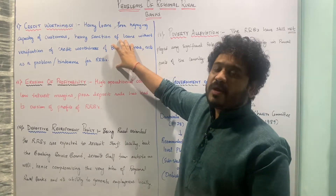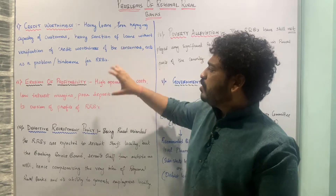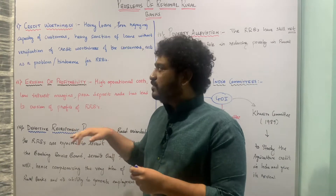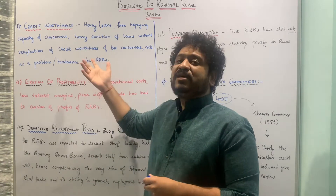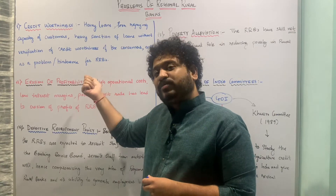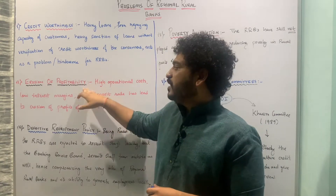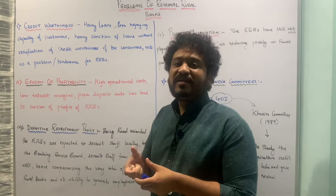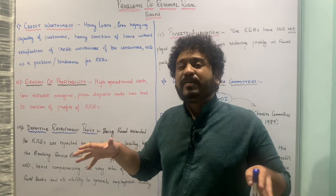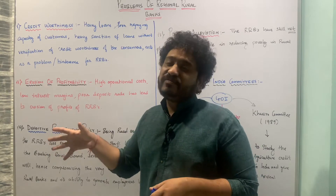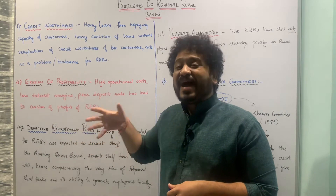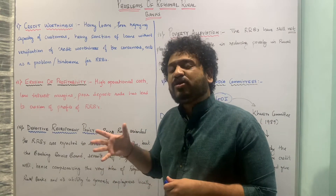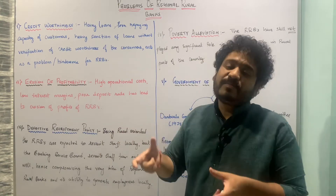The second point is about erosion of profitability. Linking poor repayment capacity of consumers to profitability: the interest margin becomes really low because you are operating in a rural setup and giving loans to weaker sections of society, who at times have poor creditworthiness. As a result, the interest margin goes down.